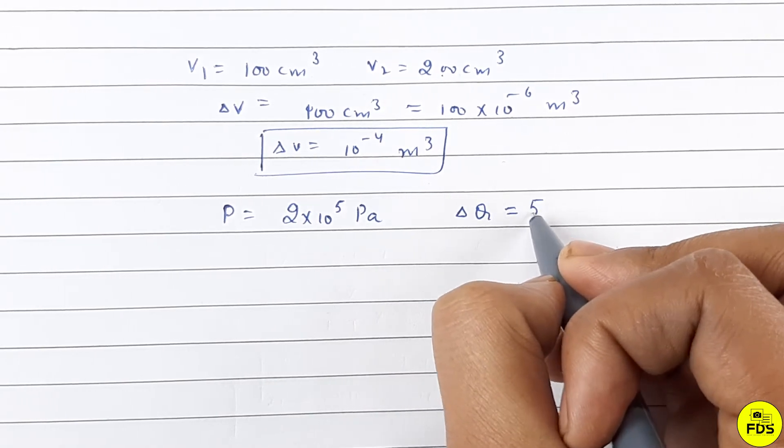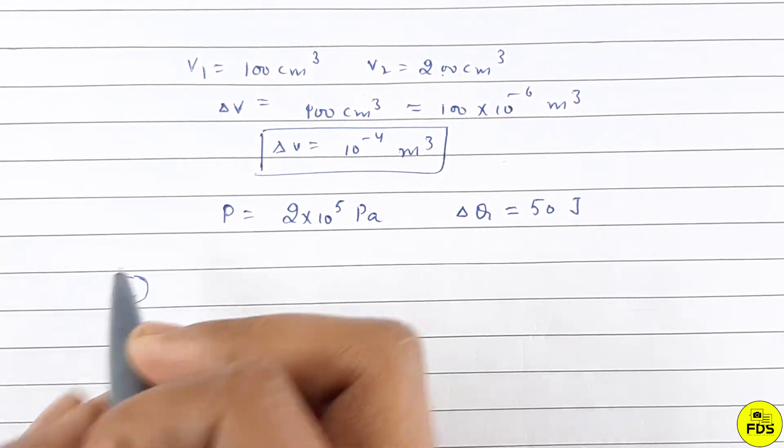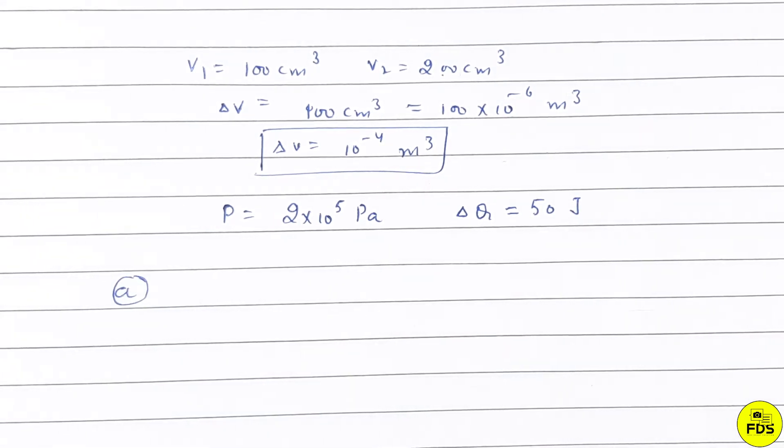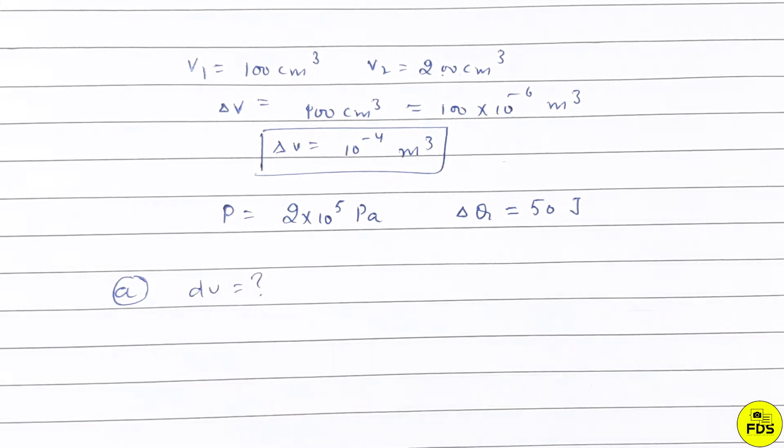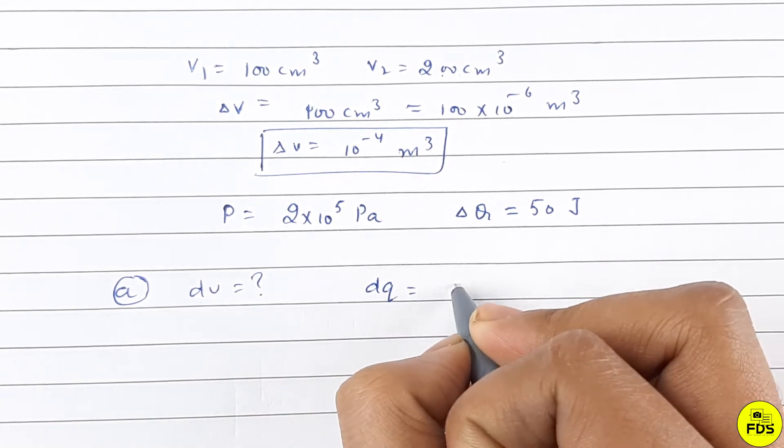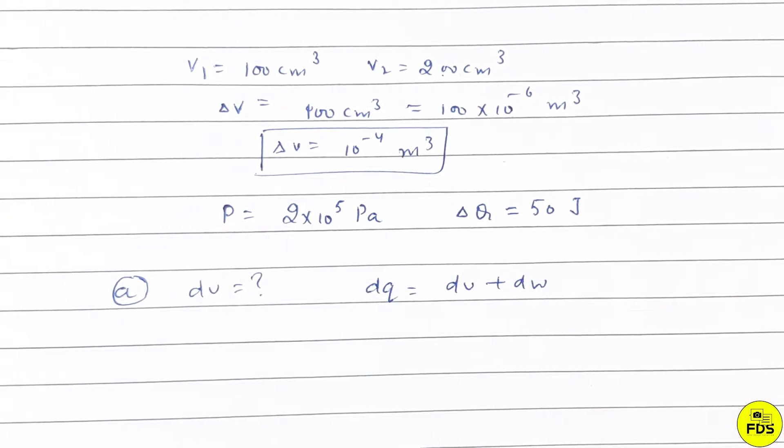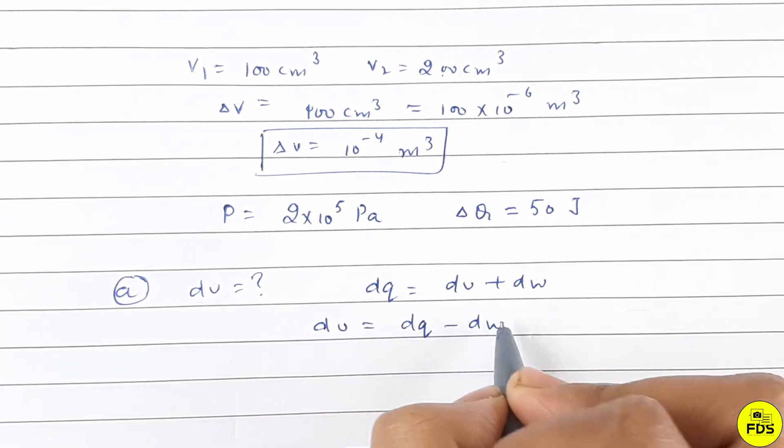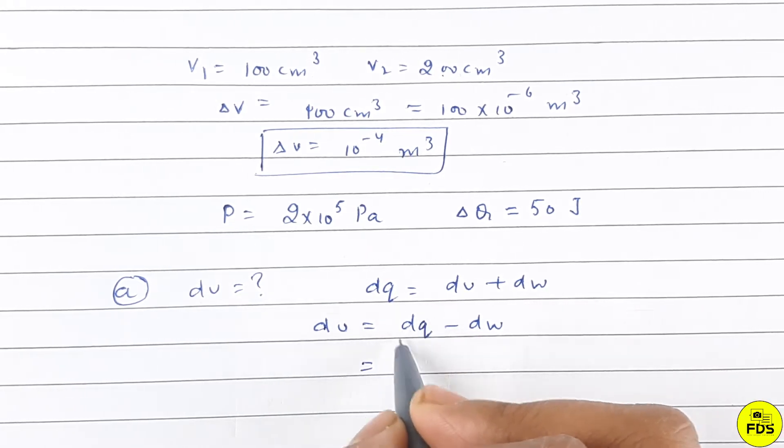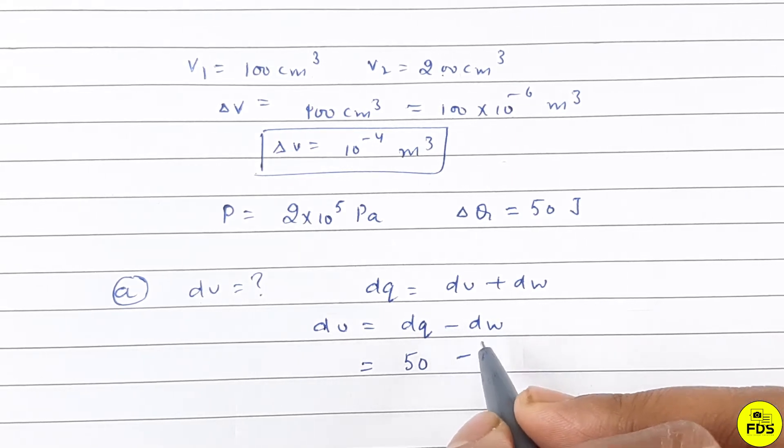In the first part they asked for the change in internal energy of the gas, meaning dU. We know that dQ equals dU plus dW, so dU equals dQ minus dW.